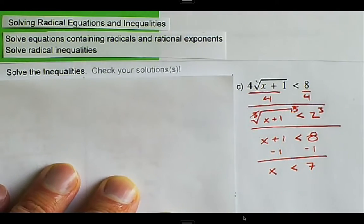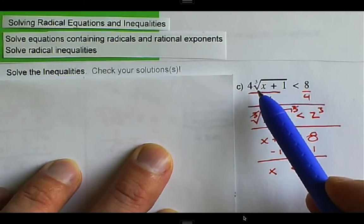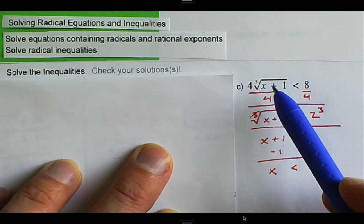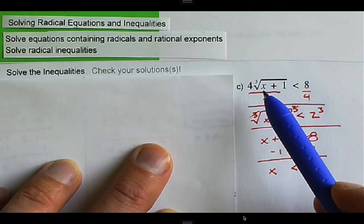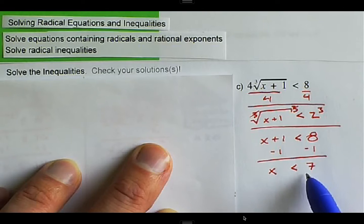Because this is an odd radical, taking the cube root, we don't care about the value underneath the radical, or we don't care if the radicand is negative or not, because we can take the cube root of negative values and still get a solution. So x is less than 7 is the answer.